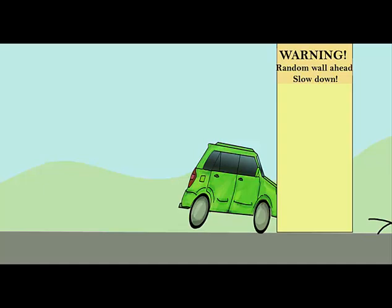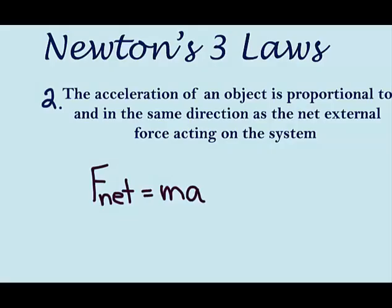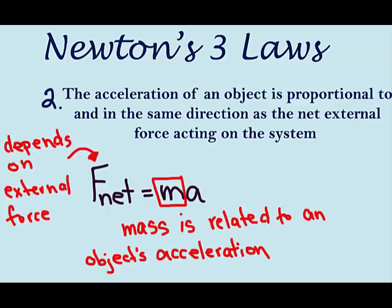So Newton's second law says that acceleration is always in the direction of the net force. We express this as F net equals ma. And mass is related to acceleration, which also depends on the net force involved. So the net force is related to acceleration and mass expresses inertia.